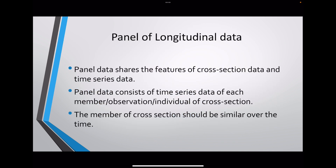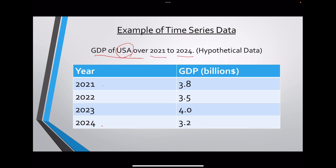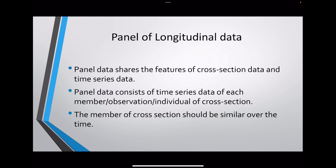Let's explore panel or longitudinal data. Panel data shares the features of cross-sectional data and time series data. It consists of time series data of each member of a cross-section. If we include multiple countries that would make it panel data. So panel data consists of time series data of each individual observation in the cross-section, meaning if we have multiple time series of multiple members in the cross-section, that is panel data.